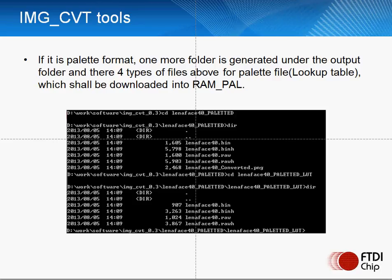If you are using a palleted format, there is an additional folder created which contains the four types of file: raw, raw header, binary, and binary header.